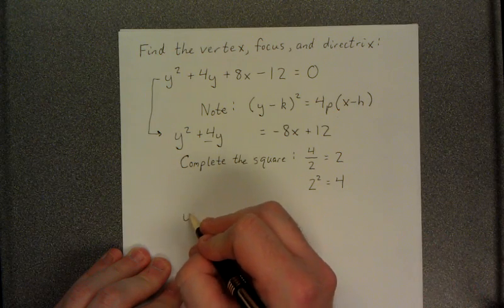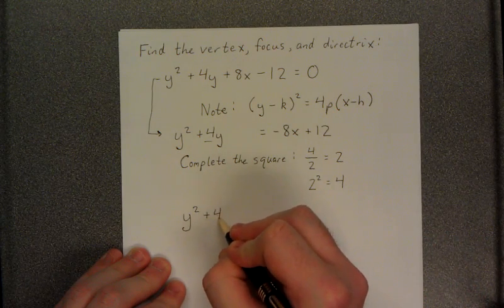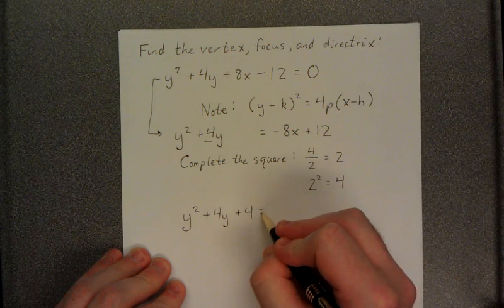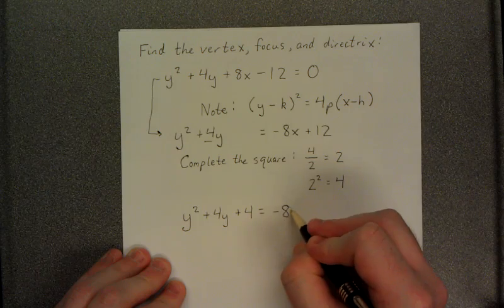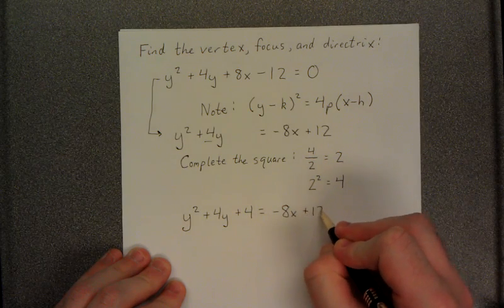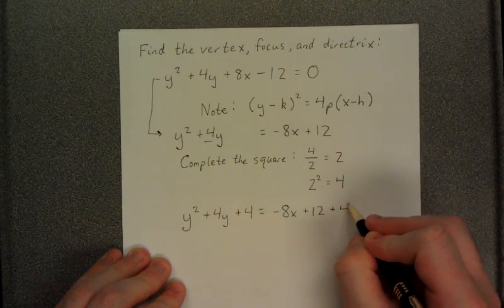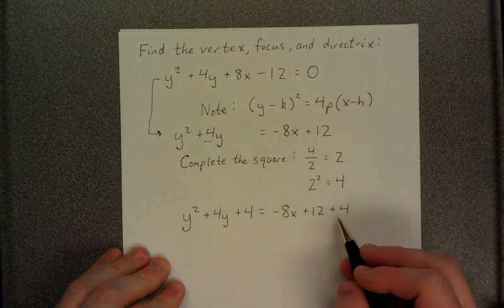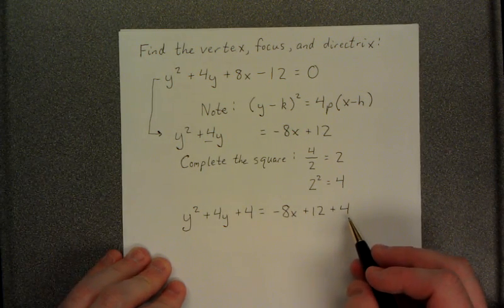Let's go ahead and do that now. y squared plus 4y plus 4. That's the 4 that we are going to add to both sides of the equation. The right side of the equation was negative 8x plus 12. Now we have negative 8x plus 12 plus the 4 we just added to both sides.